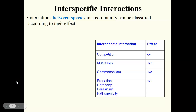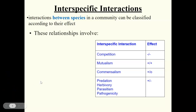Interactions between species in a community are called interspecific interactions — not to be confused with intraspecific interactions from Part 2, which were within the same species. These are between species; 'inter' means between. They can be classified according to their effect as shown in the table, and we will learn about all of these different types of relationships in this section of notes.